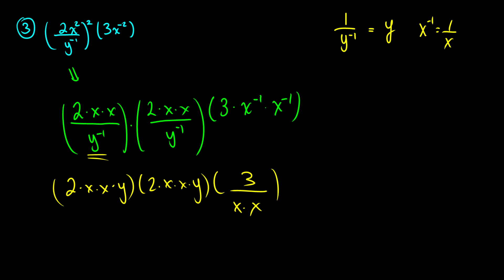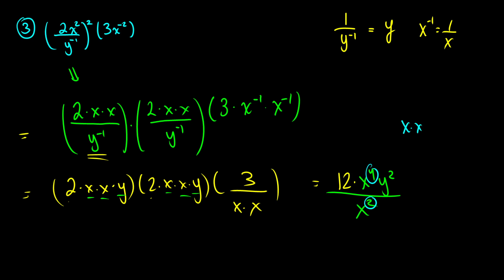Now we multiply everything together. 2 times 2 times 3 gives 12. We have x times x times x times x, so x to the fourth. And y times y gives y squared on top, divided by x squared on the bottom. x to the fourth divided by x squared cancels two x's, leaving x squared on top. So the final answer is 12x squared times y squared.